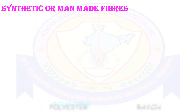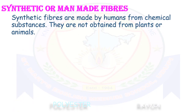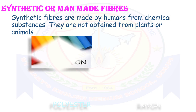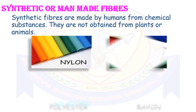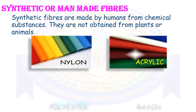Synthetic or man-made fibers are made by humans from chemical substances. They are not obtained from plants or animals. Examples include nylon, acrylic, polyester, and rayon.